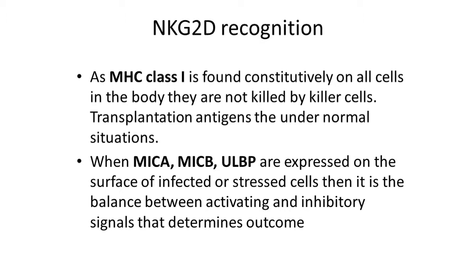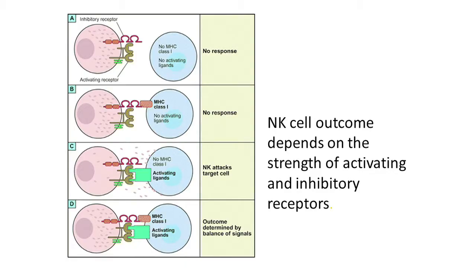Taking these together: MHC class 1 is found constitutively on all cells, so they are not killed under normal circumstances. The NKG2D ligands, on the other hand, are expressed on the surface of the cell when it becomes stressed — whether infected or stimulated in other ways. It's this balance between activating and inhibitory signals that determines whether the cell will survive or be killed. To show that graphically: if a cell has neither MHC class 1 nor any activating ligands, there's no response — as with red blood cells.